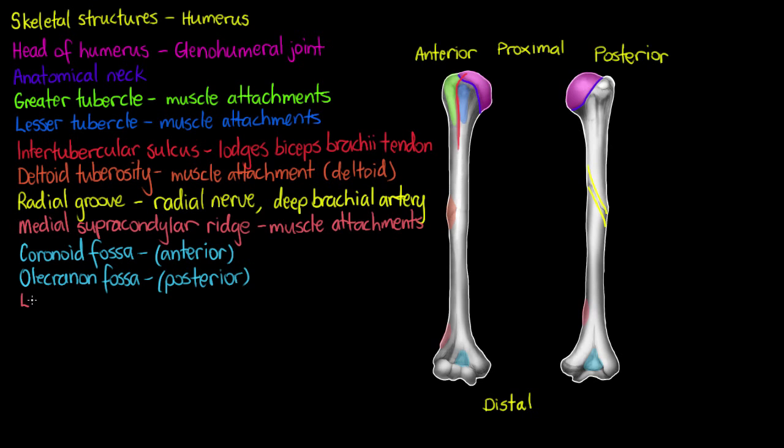And just at the distal end of our anterior humerus, we can see in that salmon color again that I've highlighted, the lateral supracondylar ridge, which again, same thing, is going to be a muscle attachment point.